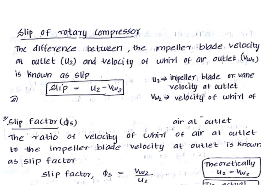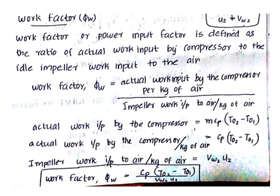The slip factor is U2 minus VW2. Now, the work factor ψw is also called the pressure coefficient. The work factor is the actual work input divided by the impeller work input. These two similar expressions are the same.